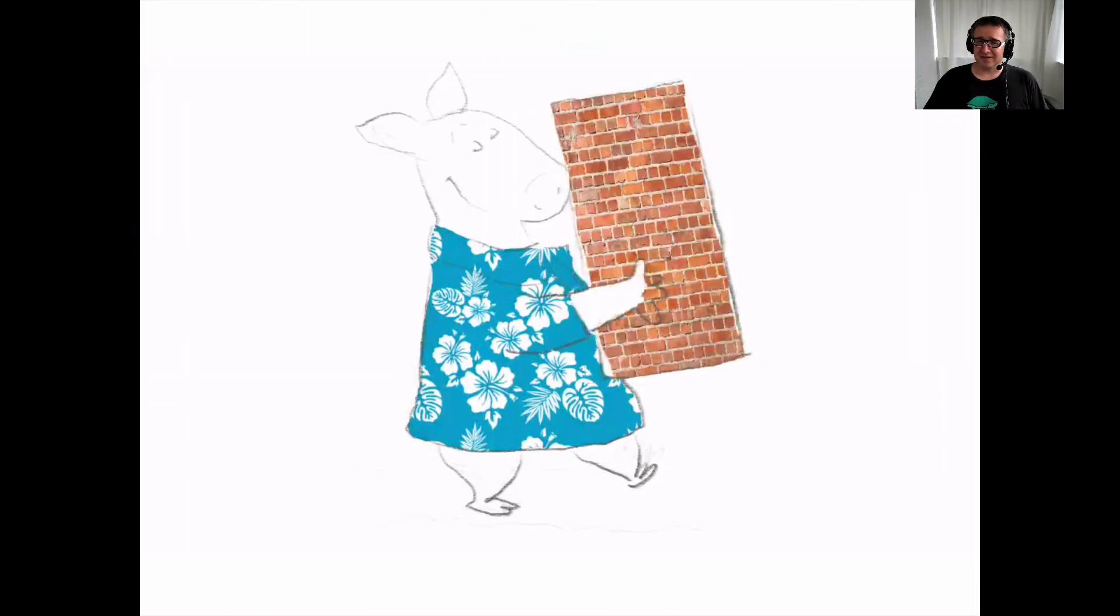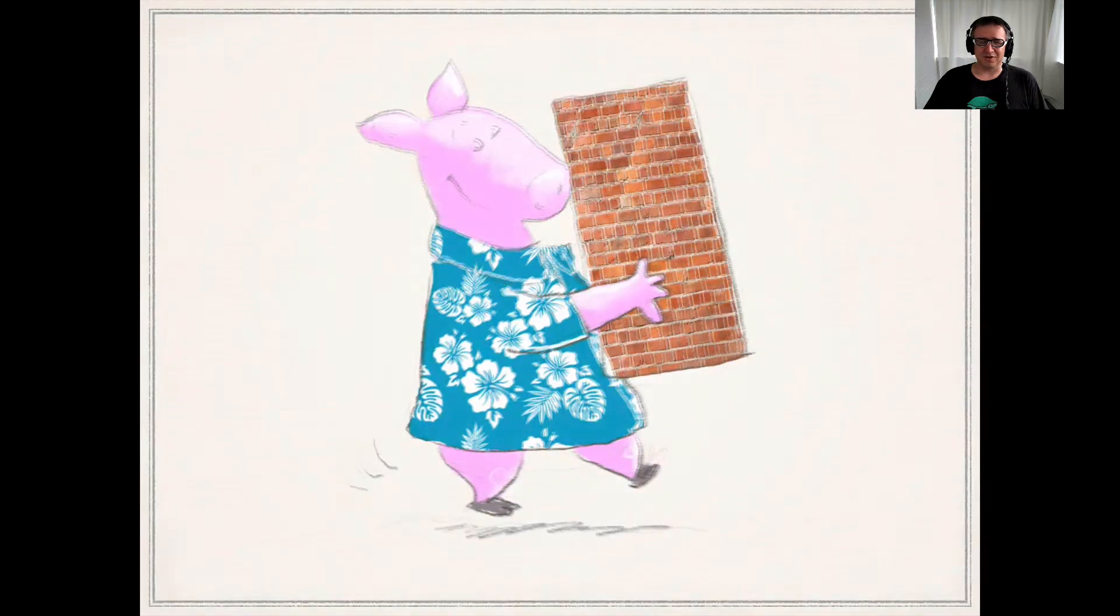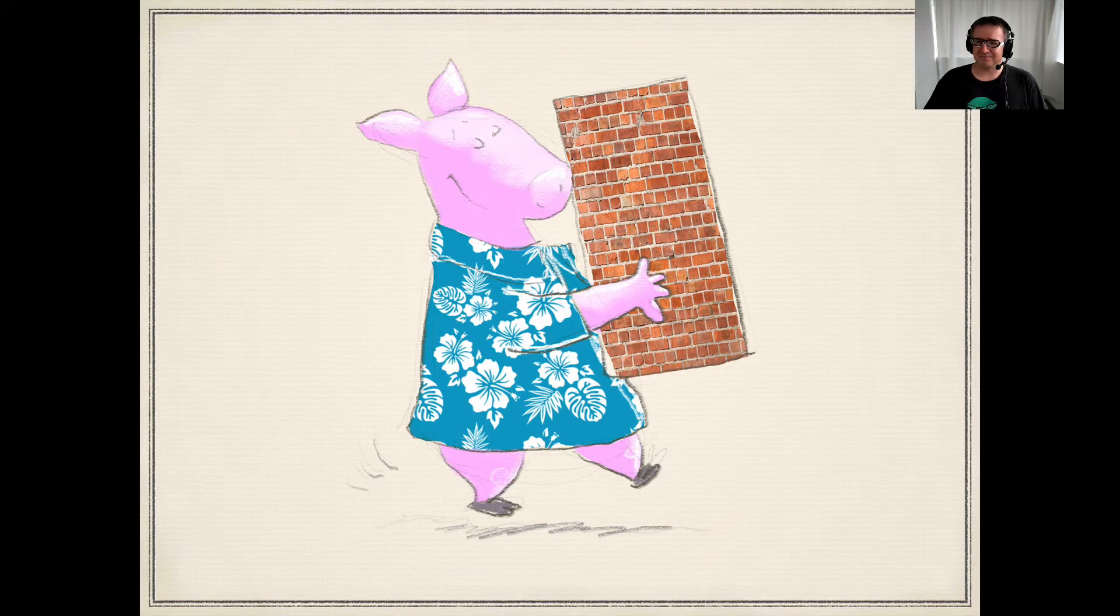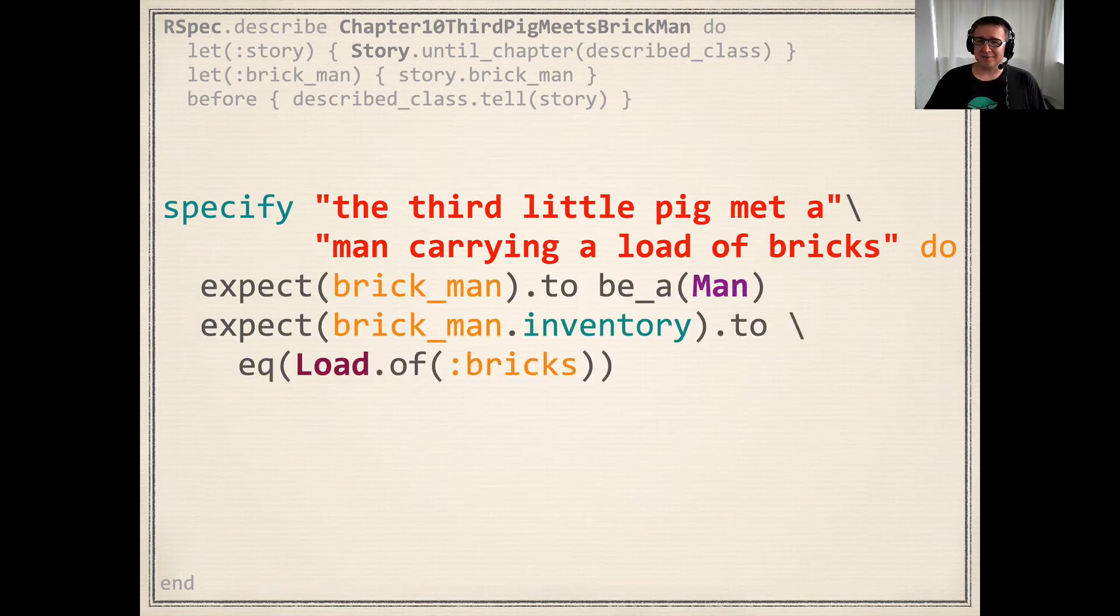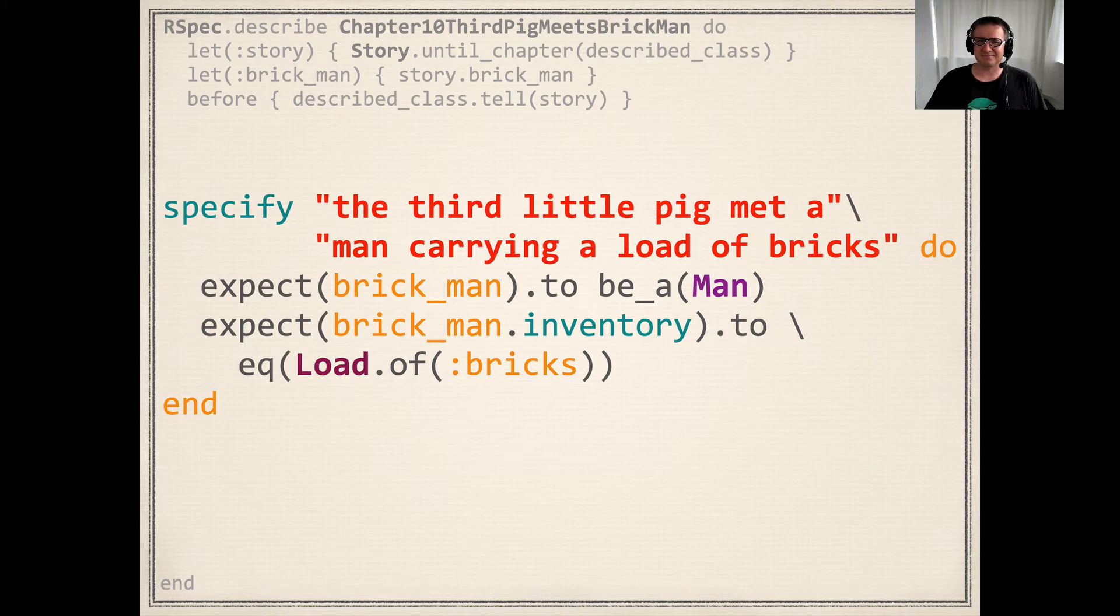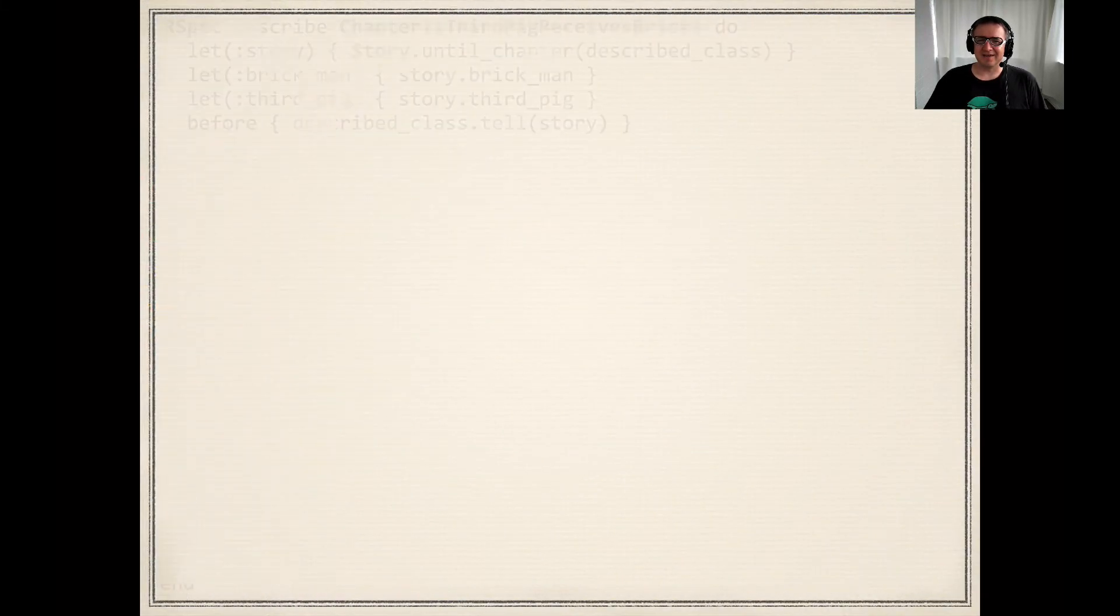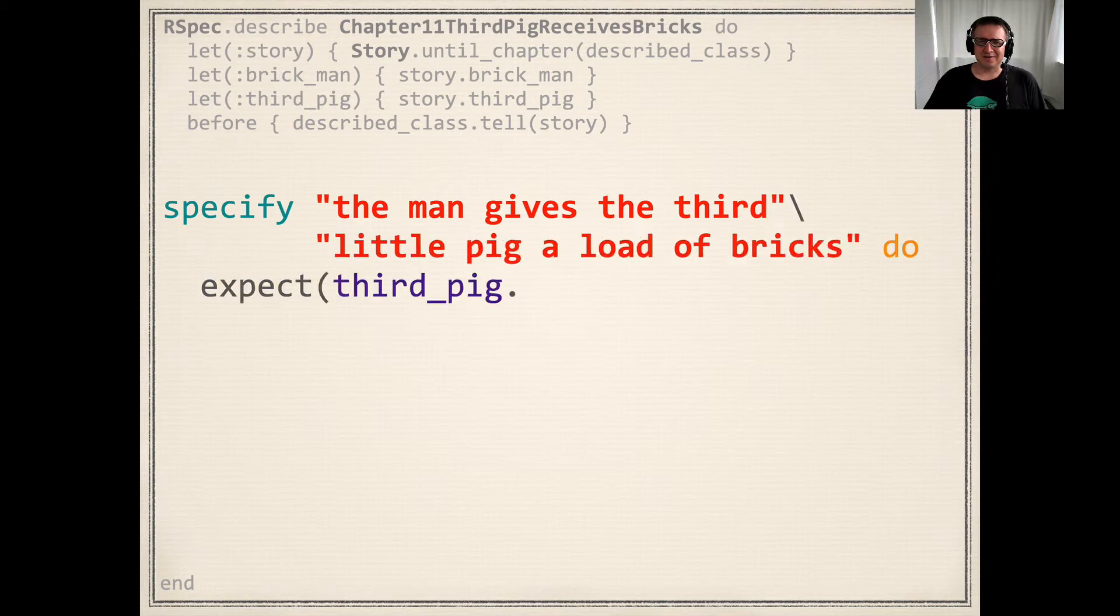The third little pig, not to be outdone by his brothers, continued down the road in search of some other material. By chance, the third little pig met a man who was carting a load of bricks. He said to the man, Please, sir, give me those bricks, so that I may build myself a house.